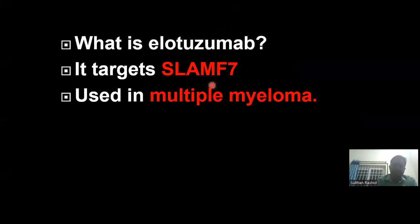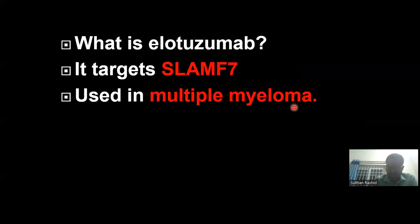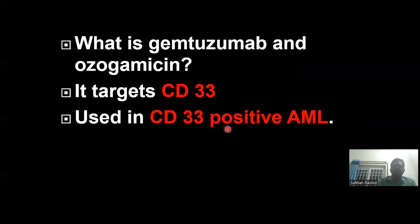Now comes elotuzumab. This monoclonal antibody targets SLAMF7 and is used in the condition called multiple myeloma — the cancer arising from plasma cells in the bone marrow. So we have daratumumab and isatuximab targeting CD38, and elotuzumab targeting SLAMF7, all used in multiple myeloma.